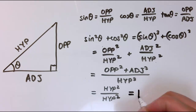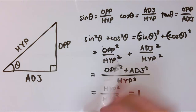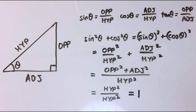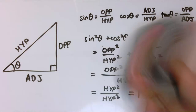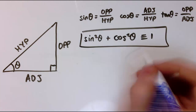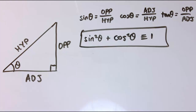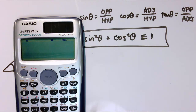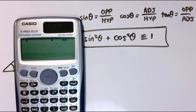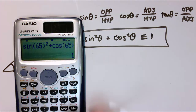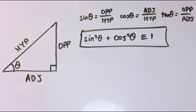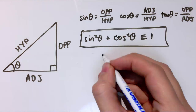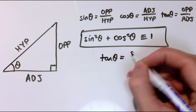Now I've got hypotenuse squared over hypotenuse squared, and anything divided by itself is just one. So I've shown that for any value of theta, sine squared theta plus cos squared theta equals one. That's our second really useful identity, and again, because it's an identity it's true for all values of theta. If you don't believe me, try it: sine of 65 squared plus cos of 65 squared gives one. That works for any angle.